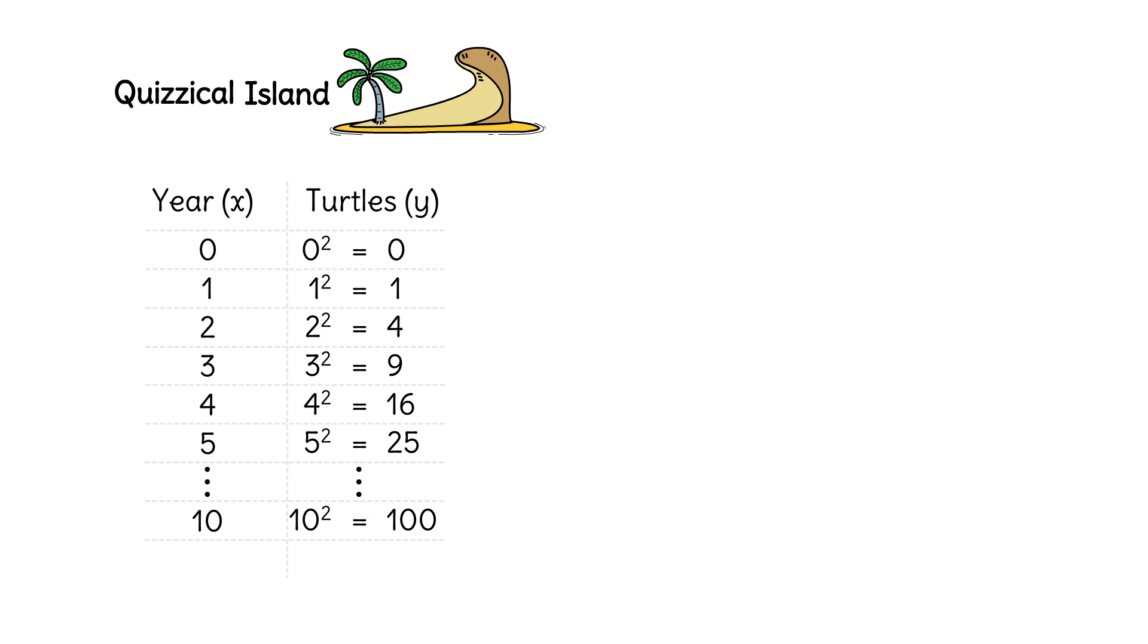That's a lot. Now, let's write an expression for the number of turtles after x years: x squared. y equals x squared is a quadratic function. y is the number of turtles after x years.